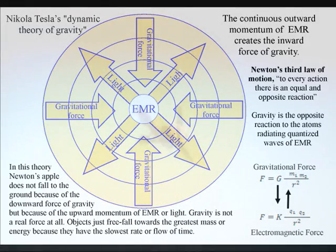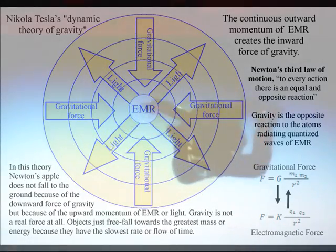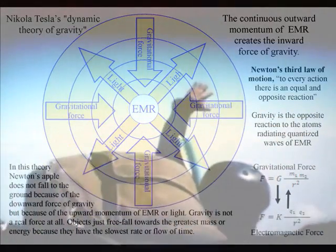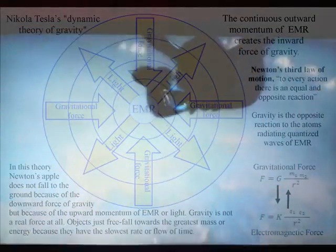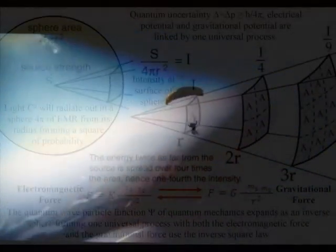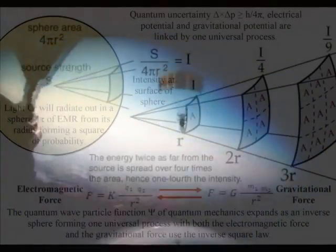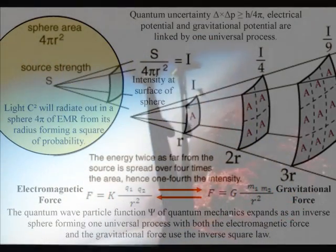In this theory, Newton's apple does not fall to the ground because of the downward force of gravity, but because of the upward momentum of electromagnetic radiation or light. Gravity is not a real force at all; it is a secondary force to the electromagnetic force. Objects just free-fall towards the greatest energy because it has the slowest rate of time or the greatest time dilation.